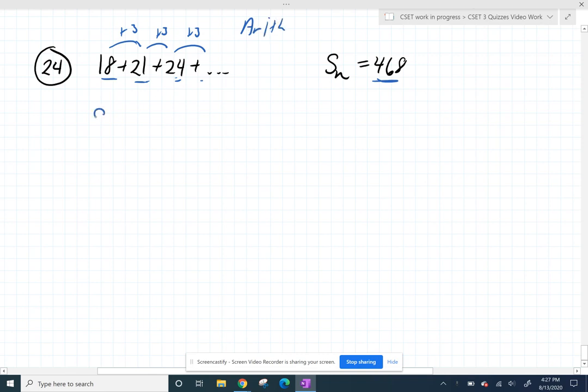So we have a formula for the sum of an arithmetic sequence, and that's the average of the first term and the last term. So add them up, divide by 2, times the number of terms.